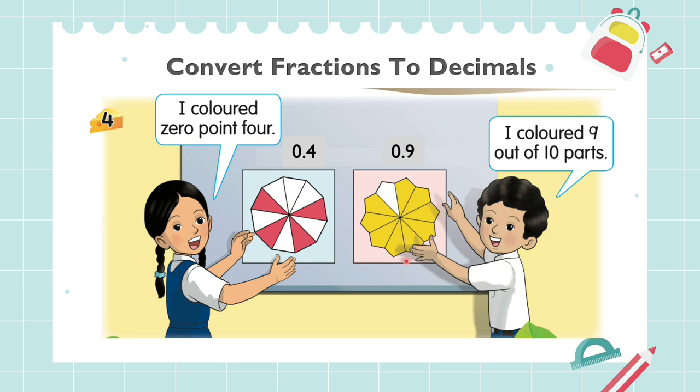9 parts is shaded, so the decimal for shaded part is 0.9. Seperti yang kita dapat lihat, murid perempuan ini memegang gambar rajah yang mempunyai 10 bahagian. 4 bahagian berlorek, jadi perpuluhan untuk bahagian yang berlorek ialah sifar perpuluhan 4. Murid lelaki pula memegang gambar rajah yang mempunyai 10 bahagian. 9 berlorek, jadi perpuluhan untuk bahagian yang berlorek ialah sifar perpuluhan 9.